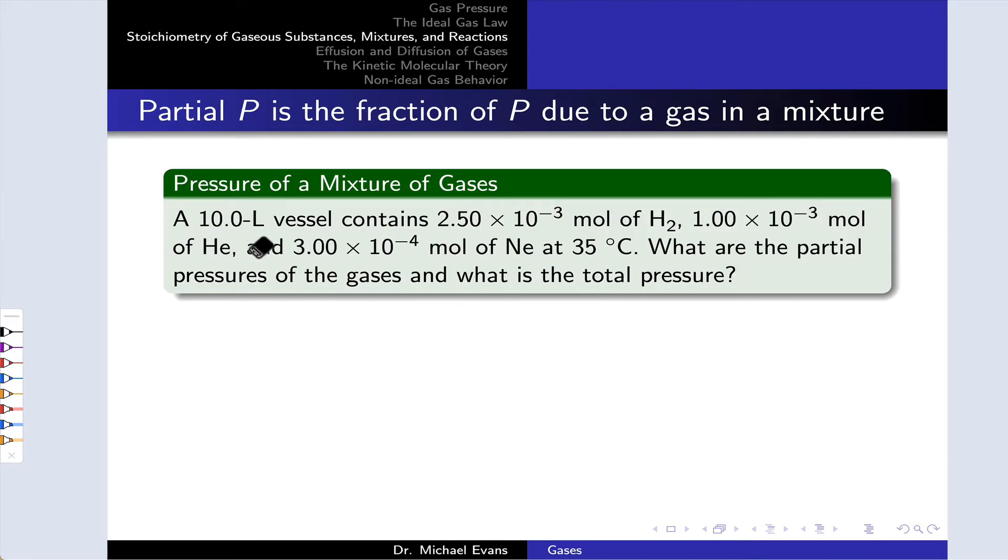This problem tells us that we've got a 10-liter vessel containing these numbers of moles of three gases: H2, helium, and neon, at 35 degrees C, and we're asked to determine the partial pressures of the gases and the total pressure. We have the numbers of moles, the temperature and the volume, and this should be enough information to determine the total pressure. But before we get into calculations, I think it's helpful to draw a picture here.